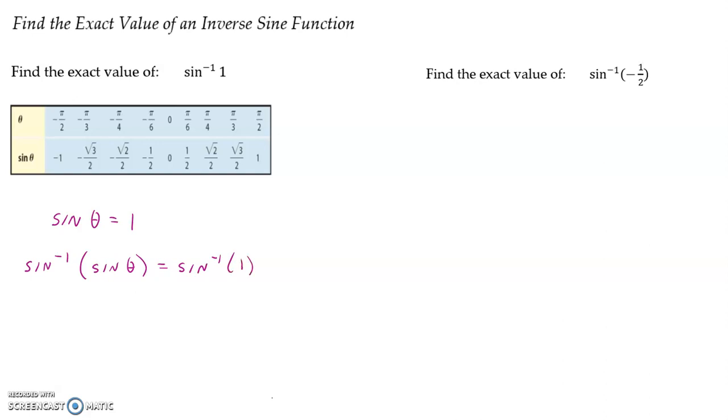Keep in mind that the inverse function and the original function are going to undo each other. That's where our angle measure, or theta, is there on the left-hand side. And on the right-hand side, we have the inverse sine of 1. Now we have a couple different ways we could do this.